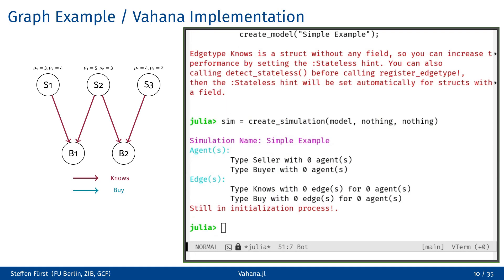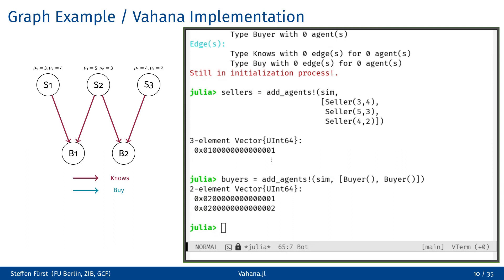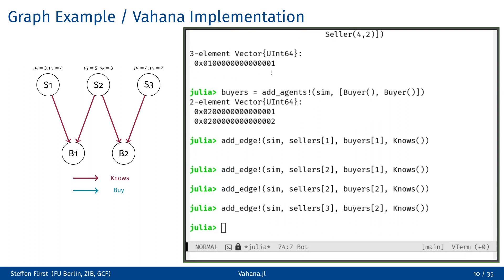We now create a simulation. A simulation is a concrete realization of a model, including simulation parameters and global, graph independent values, which often are used to retrieve aggregated simulation results. However, for our current example, we will ignore these additional elements and set them to nothing. We can add now to our simulation instance the sellers and buyers by calling the addAgent function. This function returns IDs for these agents, which we can then use in the following steps to create the edges between the agents.